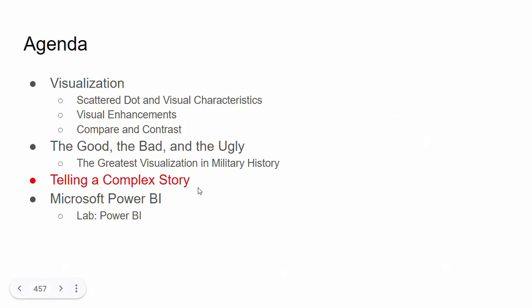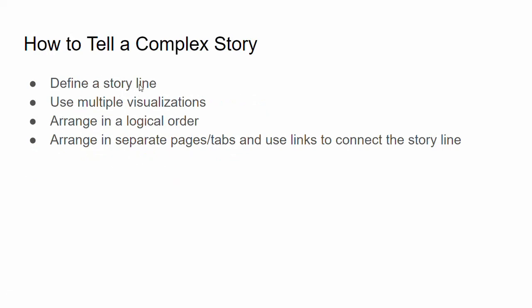What if you really have a complex story? The answer is you need to define a storyline. Identify the components of your story and break your complex story into multiple simpler ones. Use multiple visualizations. Arrange them in logical order. Then in Power BI or whatever tool you use, utilize separate pages or tabs, and use links to connect the storyline. You break the story into smaller pieces, each represented by one visualization, arranged in a logical order, and link them together.